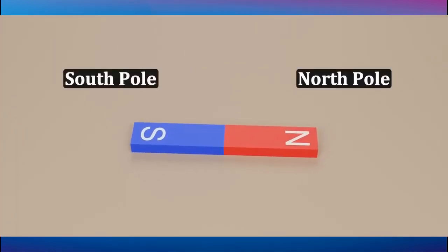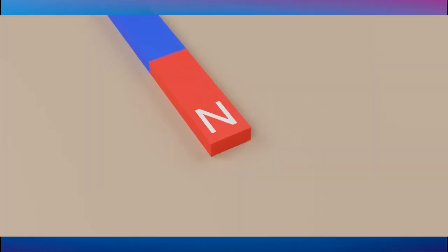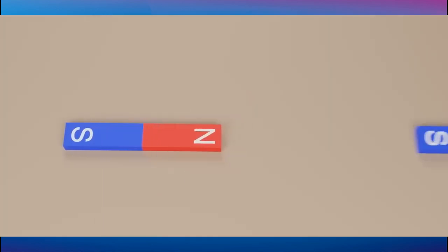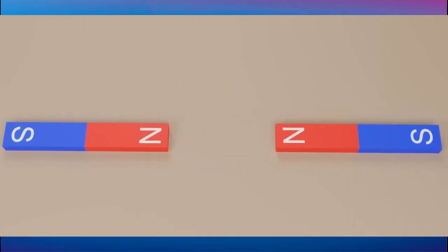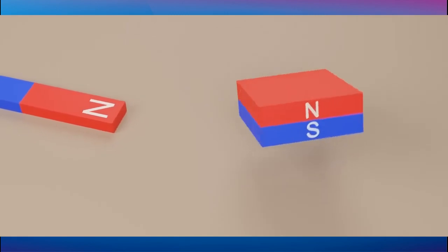So, if you have two bar magnets with their ends marked north and south, then the north end of one magnet will attract the south end of the other. On the other hand, the north end of one magnet will repel the north end of the other, and south will repel south.